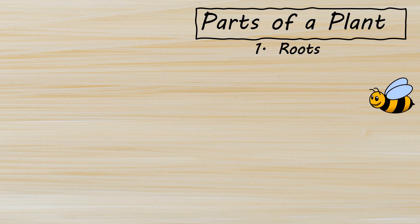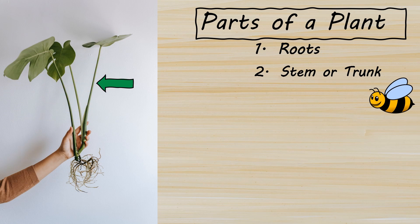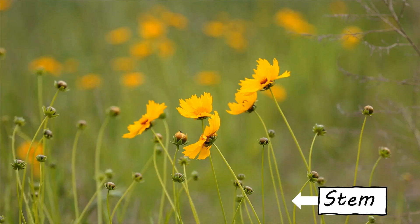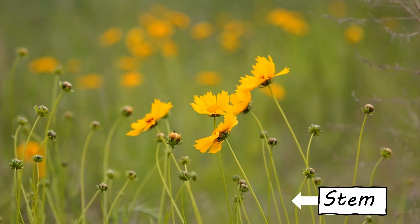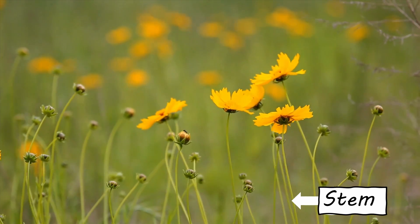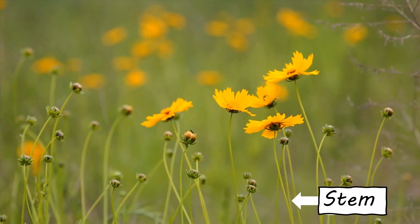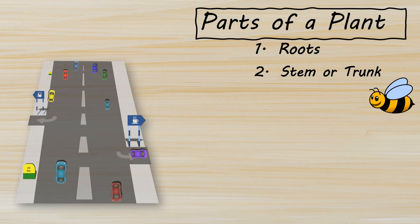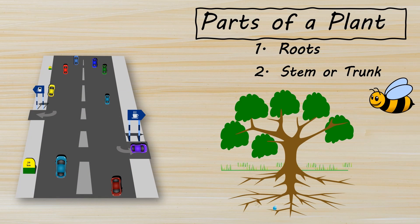Next, we have the stem. The stem of a plant is its body, or trunk. It stands tall and proud, holding up the leaves and flowers. But it's not just a support system — it's also like the plant's highway. It carries water and food from the roots to the rest of the plant.